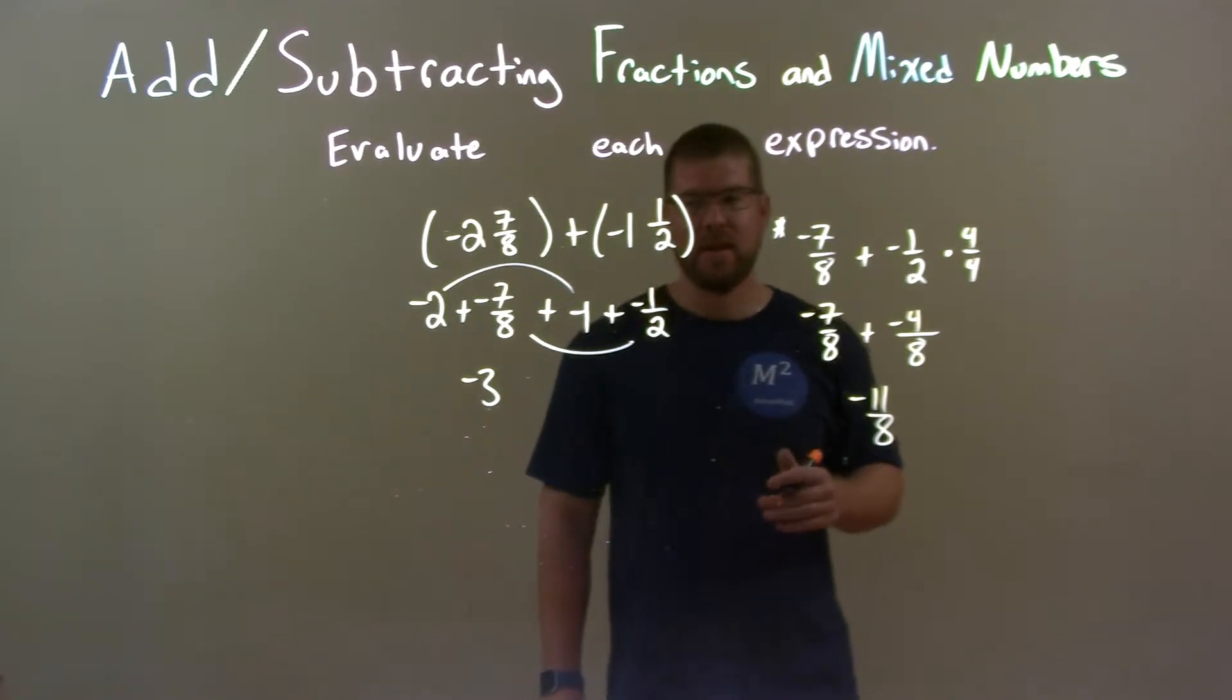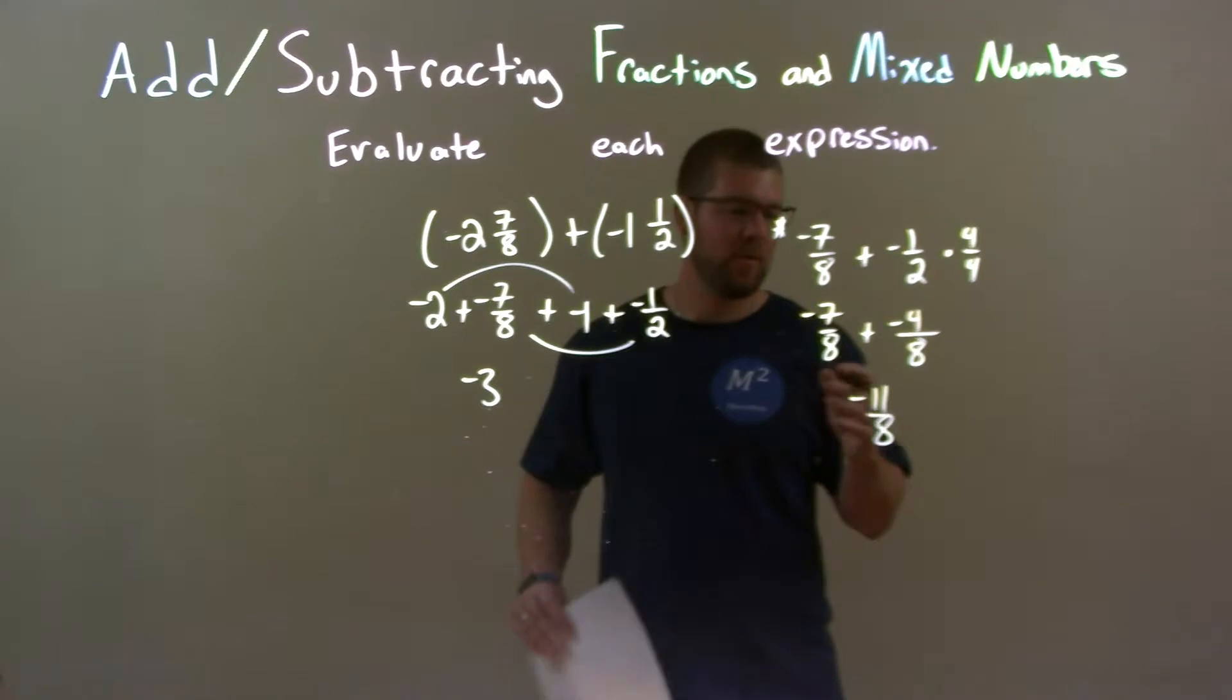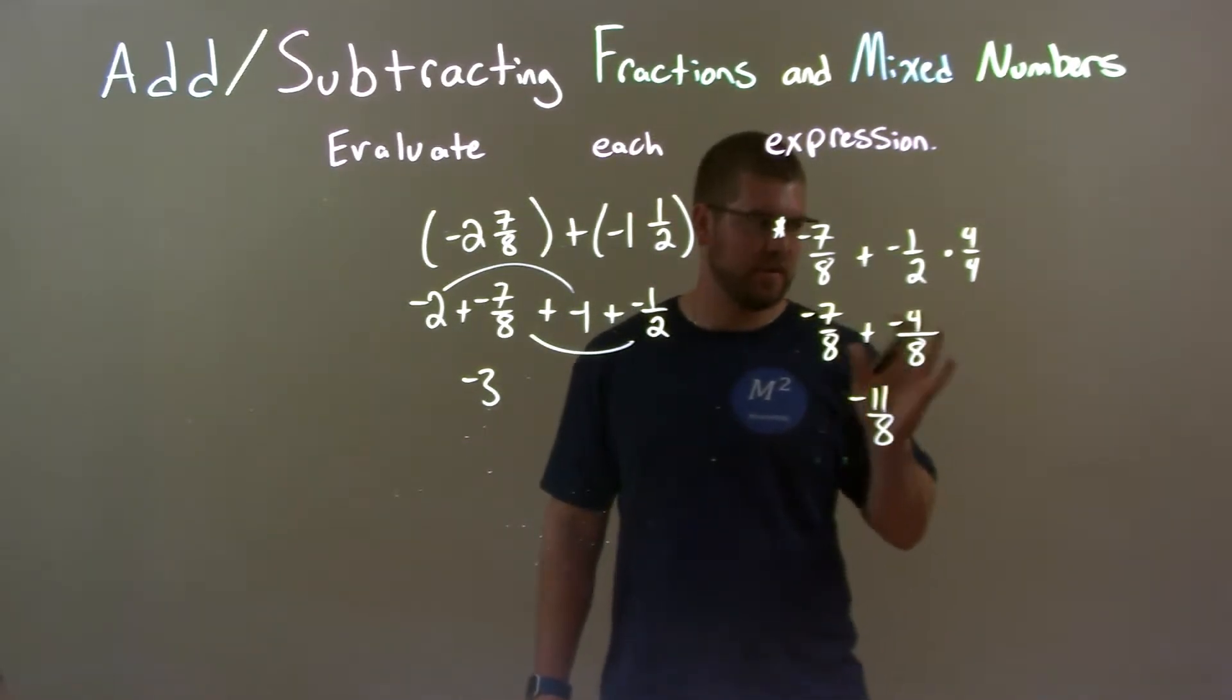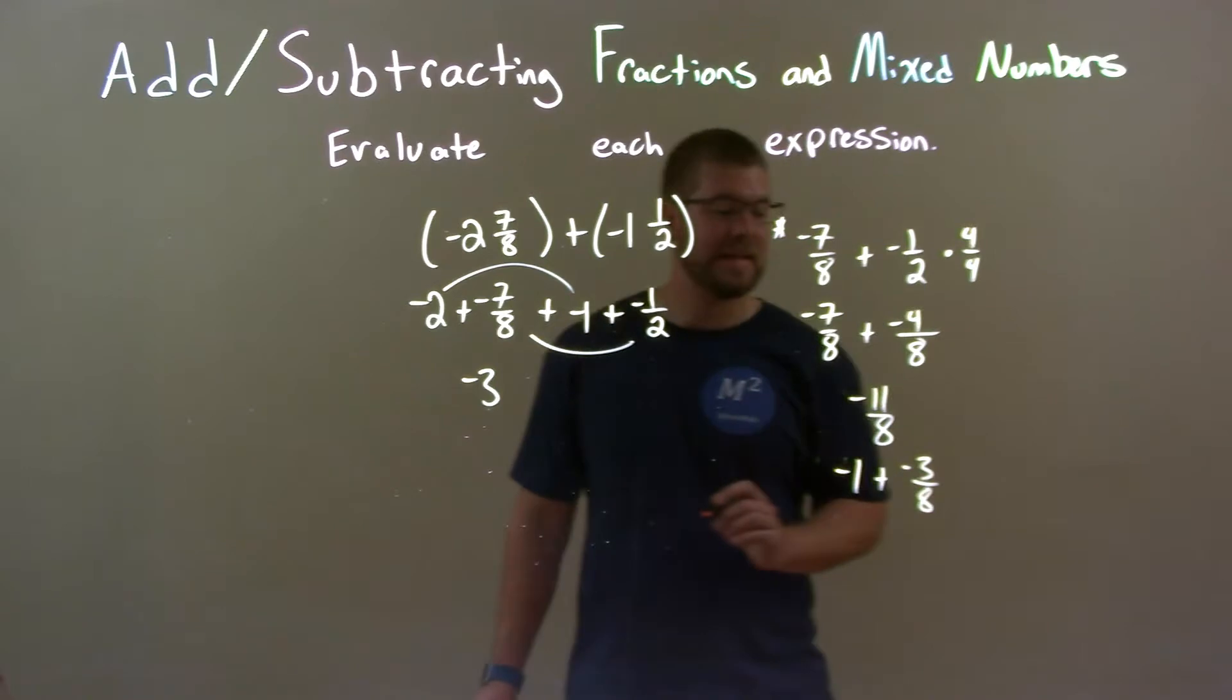And now, I'm going to write that as a mixed number. We have a negative 1 plus, right? And there's 3 left over because 8 goes into 11, plus 3 more gives me 8, plus 3 gives me 11. So, we have a negative 3 eighths there.